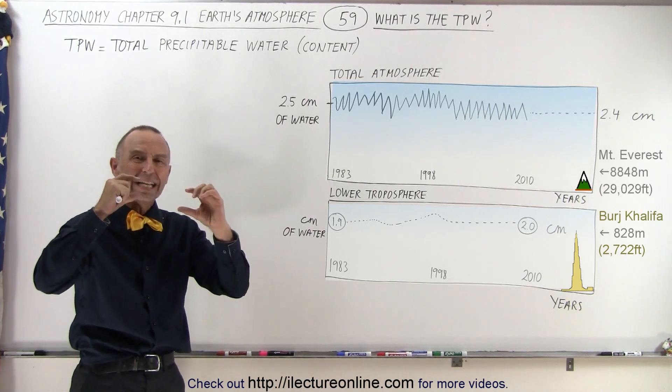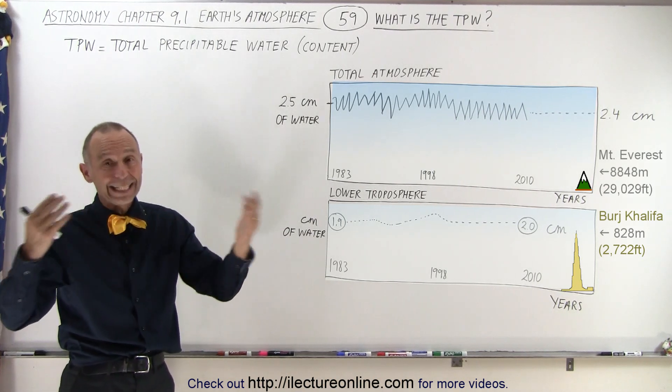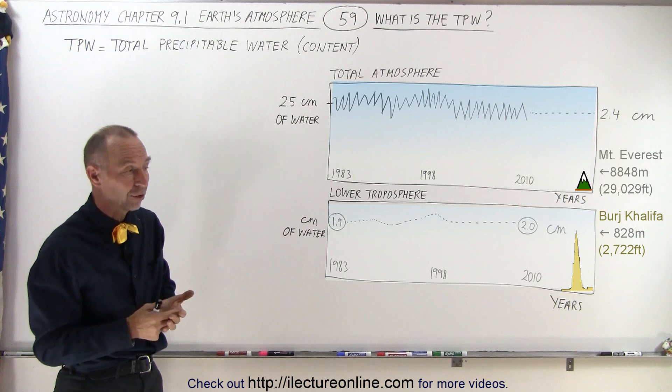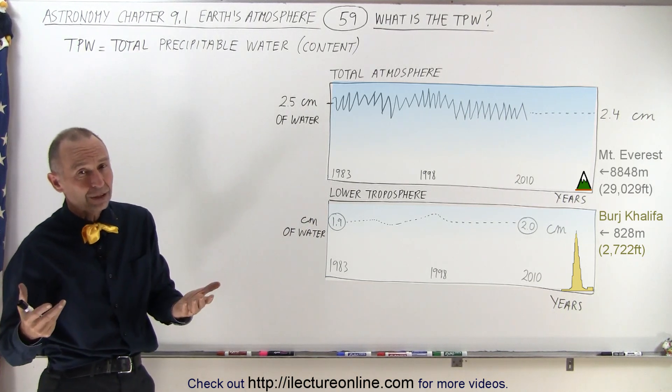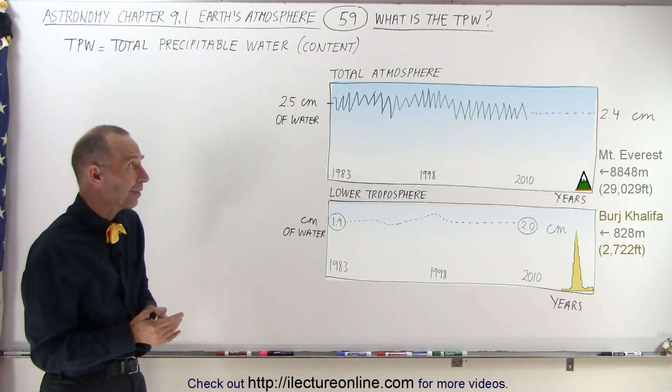So at all times there's about one inch of precipitable water in the atmosphere on average. In some places, of course, it's a lot more over tropical areas, and in some places over desert areas, it's a lot less.